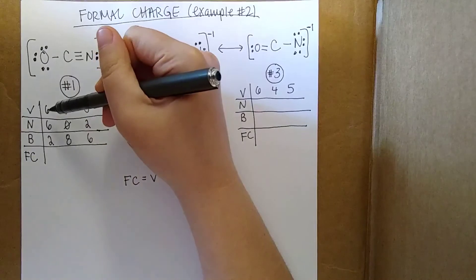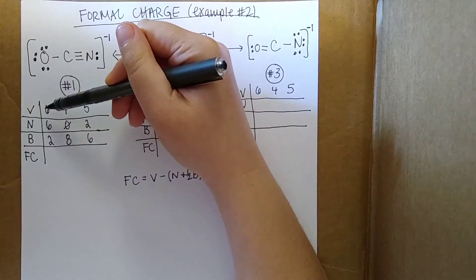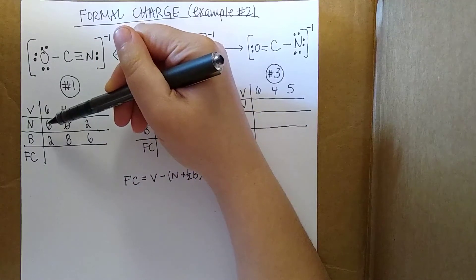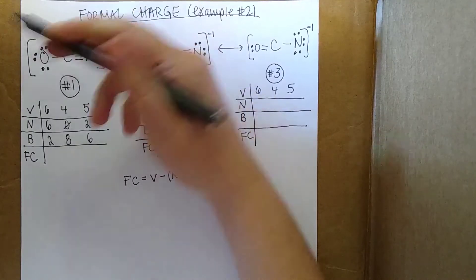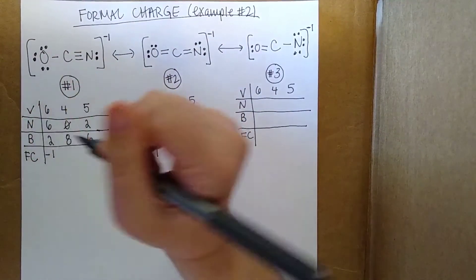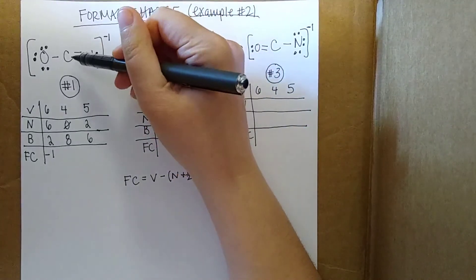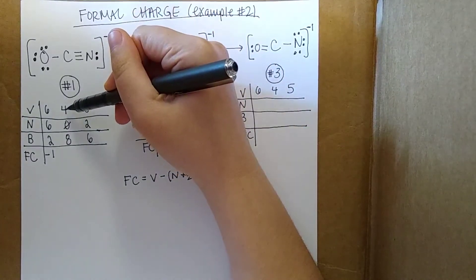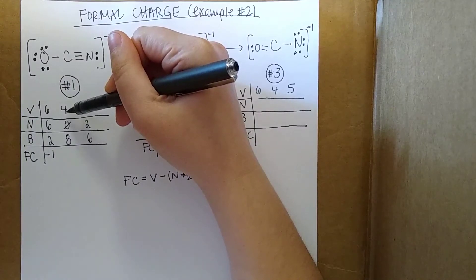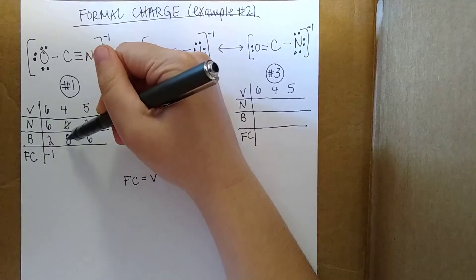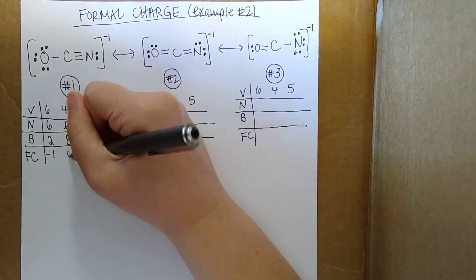Let's compute the formal charges. We have to do 6 minus 6 minus 2 times 1 half, which is 1. So the formal charge on this guy is going to be minus 1. We'll go through something similar here for the carbon. It's 4 minus half times 8, so 4 minus 4 gives 0.